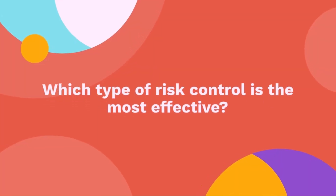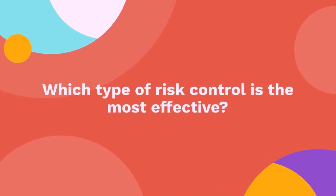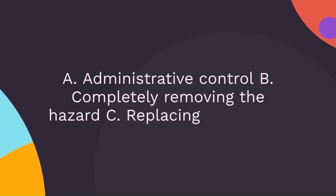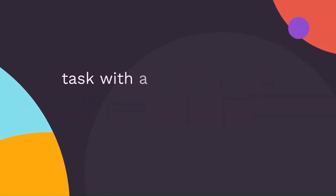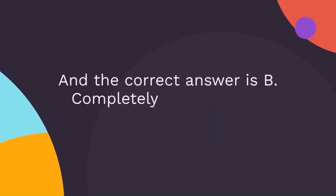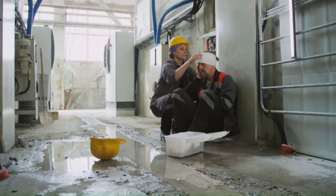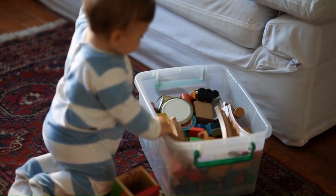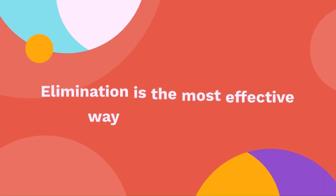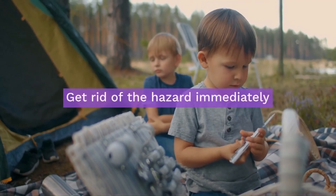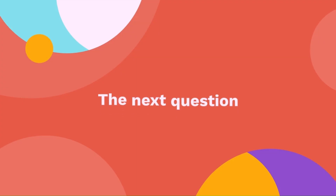Question 23: Which type of risk control is the most effective? A — administrative control, B — completely removing the hazard, C — replacing a high-risk task with a low-risk task, D — using PPE to manage the hazard. The correct answer is completely removing the hazard. Removing the hazard is the best way to ensure safety, just like removing a sharp object from a child's reach. Elimination is the most effective way to control risks — get rid of the hazard immediately.